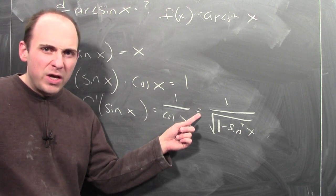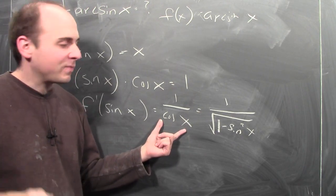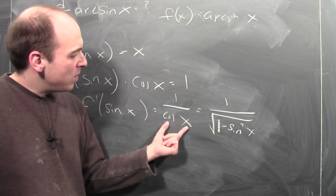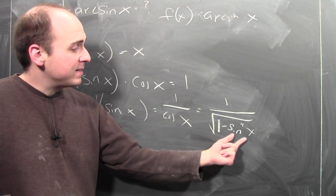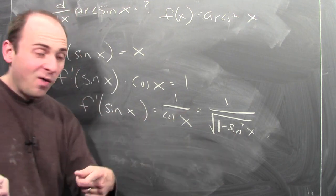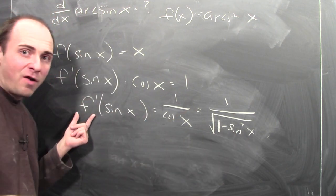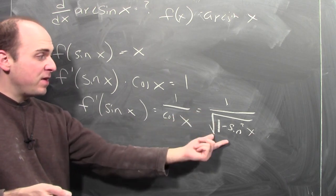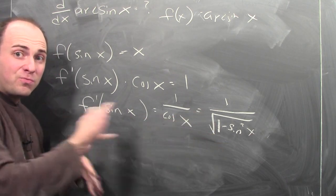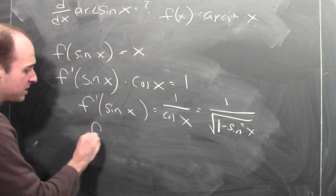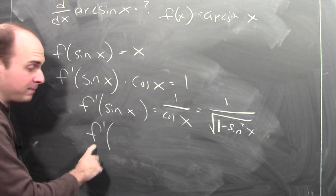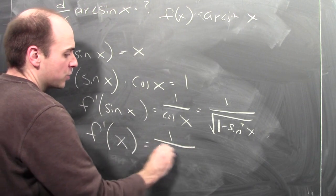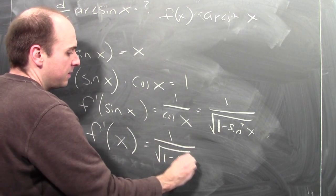You have to be a little worried here because you need to know that cosine is positive. But let's suppose it is. If cosine is positive, I can write cosine x as the square root of 1 minus sine squared x. Now I've got a formula for the derivative of f at sine x involving sine x. So I can rewrite this as: the derivative of arcsine at x is 1 over the square root of 1 minus x squared.